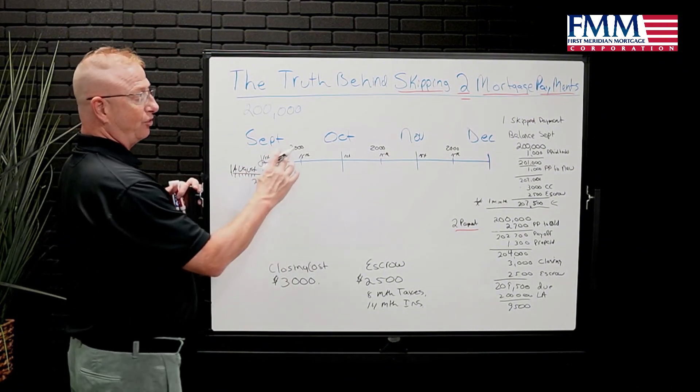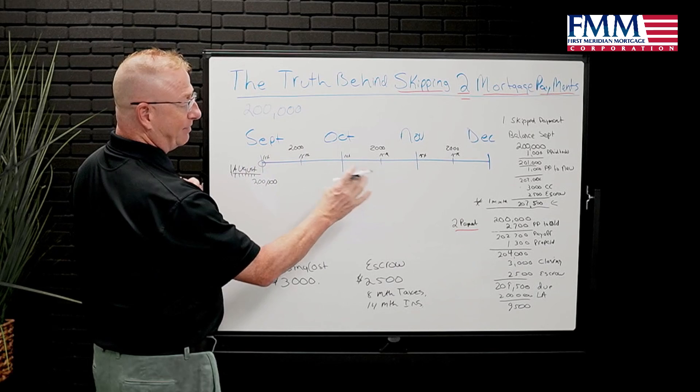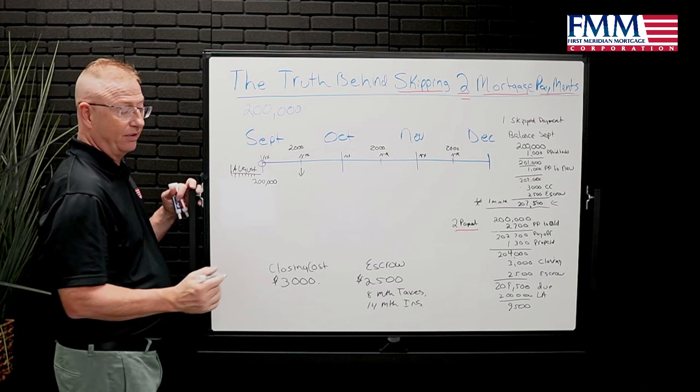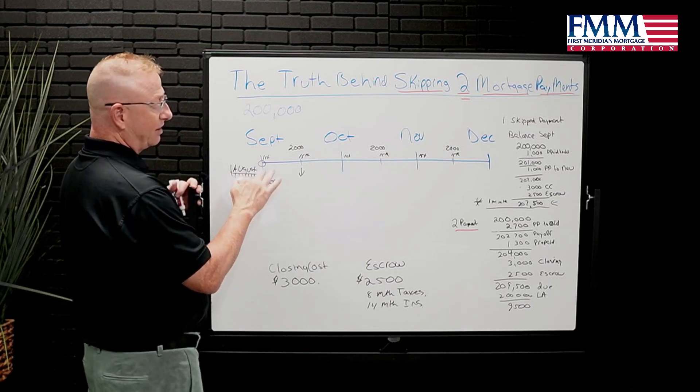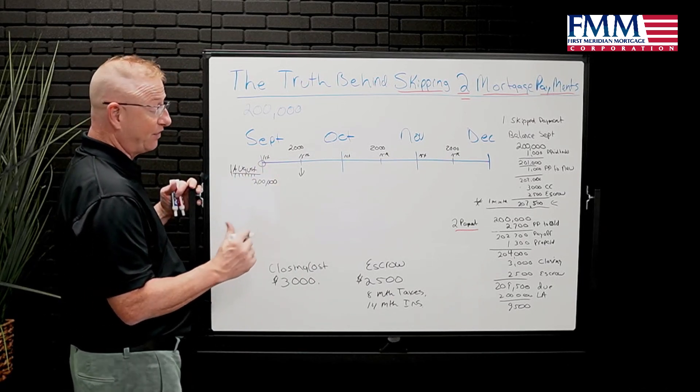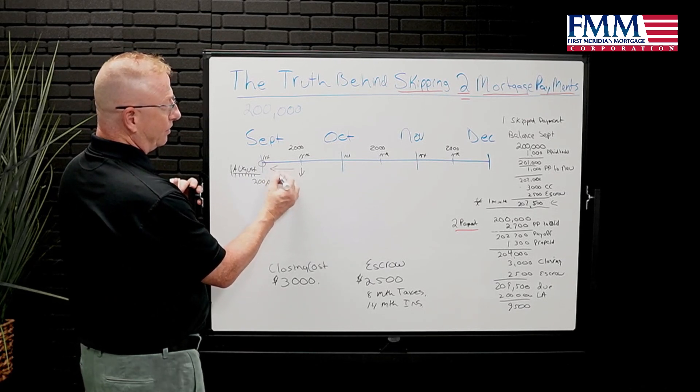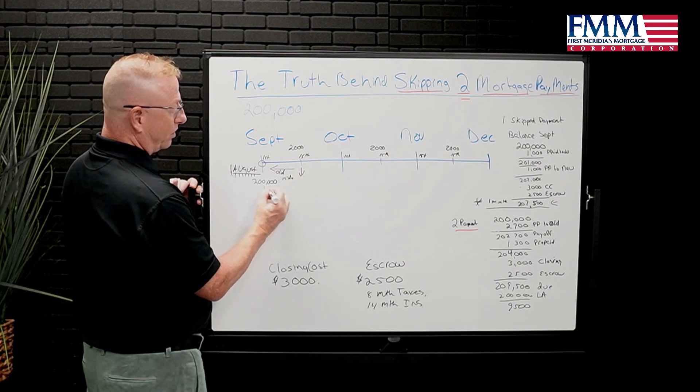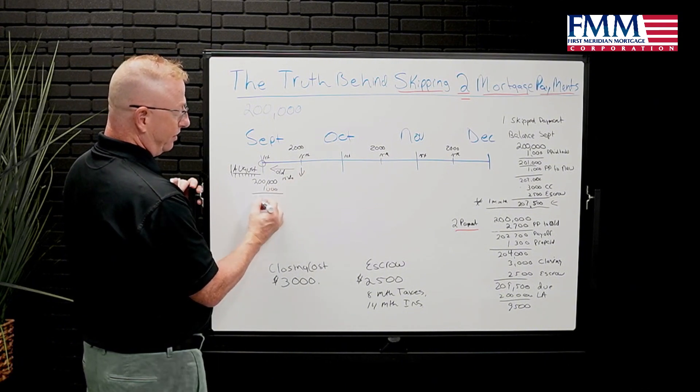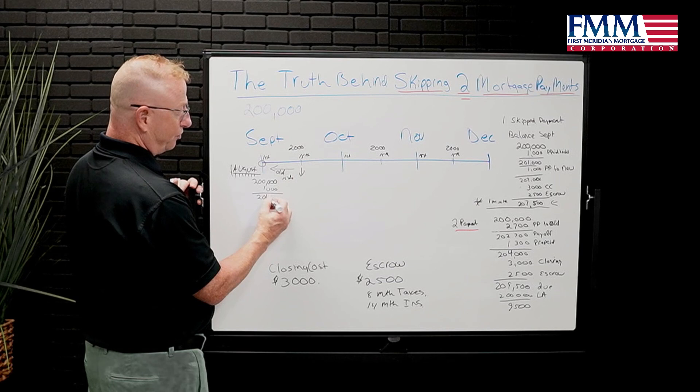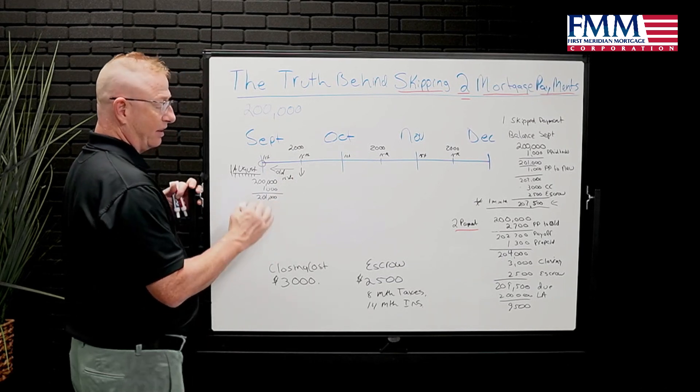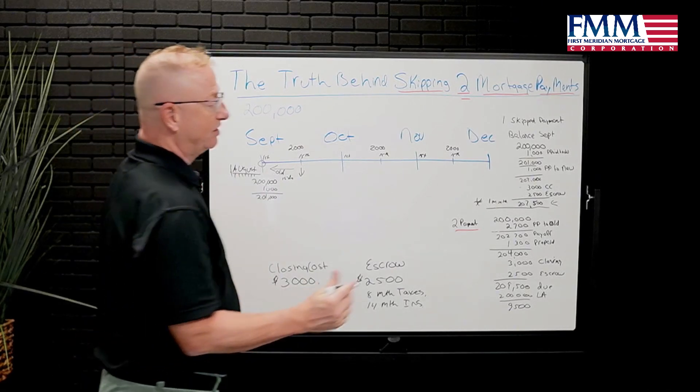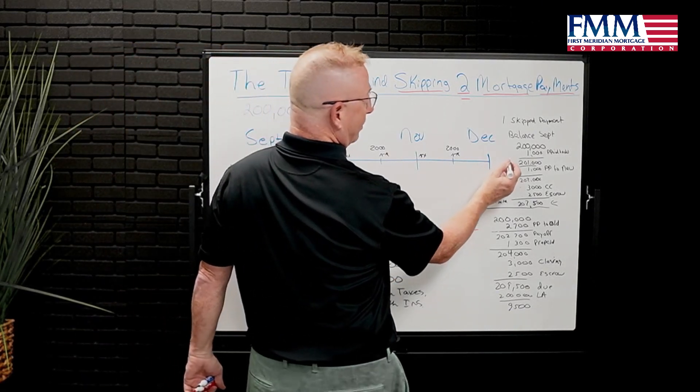So in this scenario, $2,000 a month is our payment. And let's just say we close on the 15th of the month. The last payment you made was September 1st. You owe the old lender 15 days of interest. We're going to call that $1,000. So now you owe the old lender $201,000. $1,000 of its interest, $200,000 in principal. That is this number here. We call that your payoff.